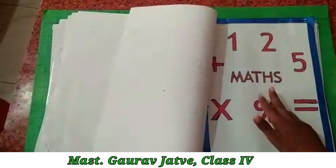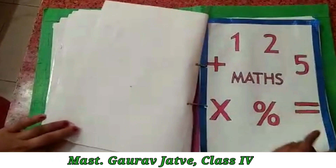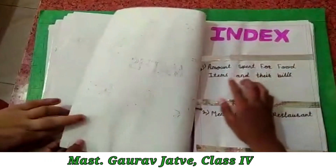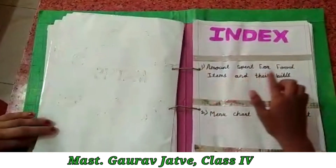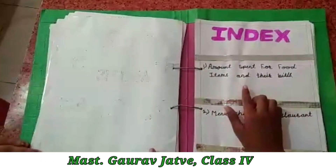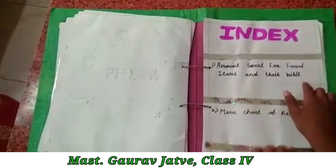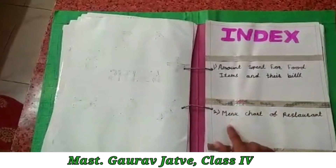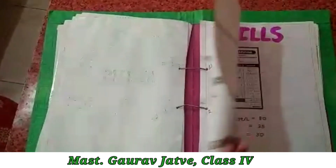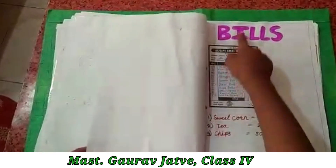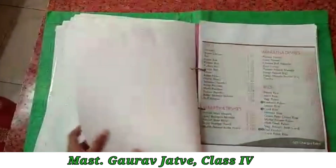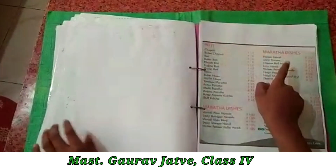Good eating habits. This is my maths project. Index: amounts spent for food items and their bills, menu and assessments, menu chart of food, banking.